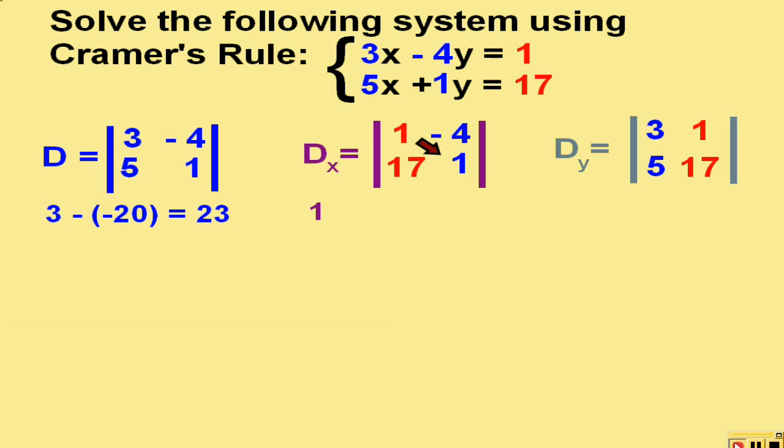One times one is one, minus negative four times seventeen, which is negative sixty-eight. And one minus negative sixty-eight is sixty-nine.